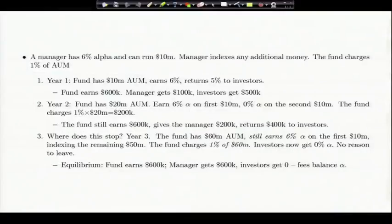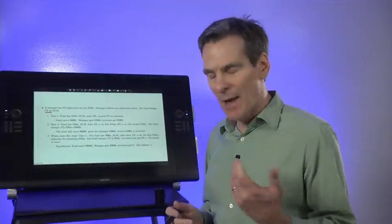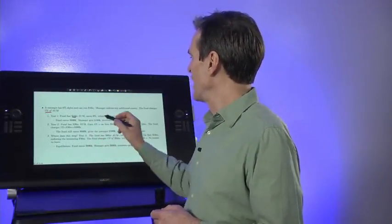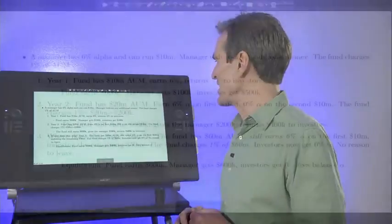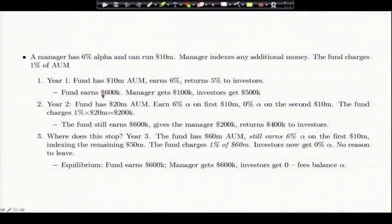Suppose a manager has 6% alpha—he can really earn 6% alpha, but to limited scale. The manager can only earn 6% alpha on $10 million of investment. So if he has $10 million, he can earn $600,000 a year. Beyond that, it becomes a crowded trade due to price impact and so forth. Any additional money the investor will simply put in the index and earn zero alpha. The fund charges 1% of assets under management, which is a standard mutual fund fee. In year one, the fund starts with $10 million. The manager earns 6% and returns 5% to investors, keeping the 1% fee. The fund earns $600,000; the manager gets $100,000 and returns $500,000 to investors.